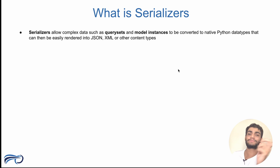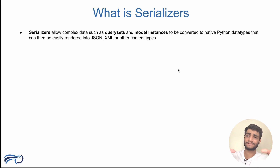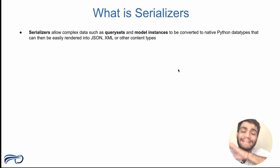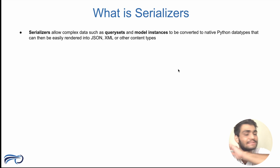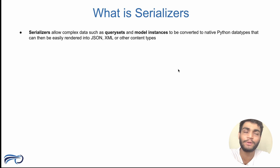Serializers allow complex data types such as query sets and model instances to be converted into native Python data types that can then be easily rendered into JSON, XML, or other content types.